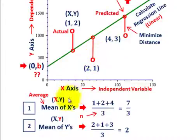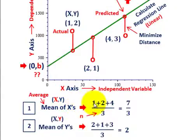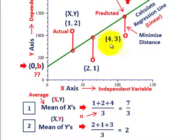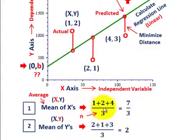The first thing we have to do is find our means — the averages. Let's look at the mean of the x's. We take our first x value, 1, add the next x value, 2, then add the next x value, 4. Adding those together gives us 7, and we have 3 data points, so we divide by n, which is 3. The mean of the x's, or average value of the x's, is 7/3.